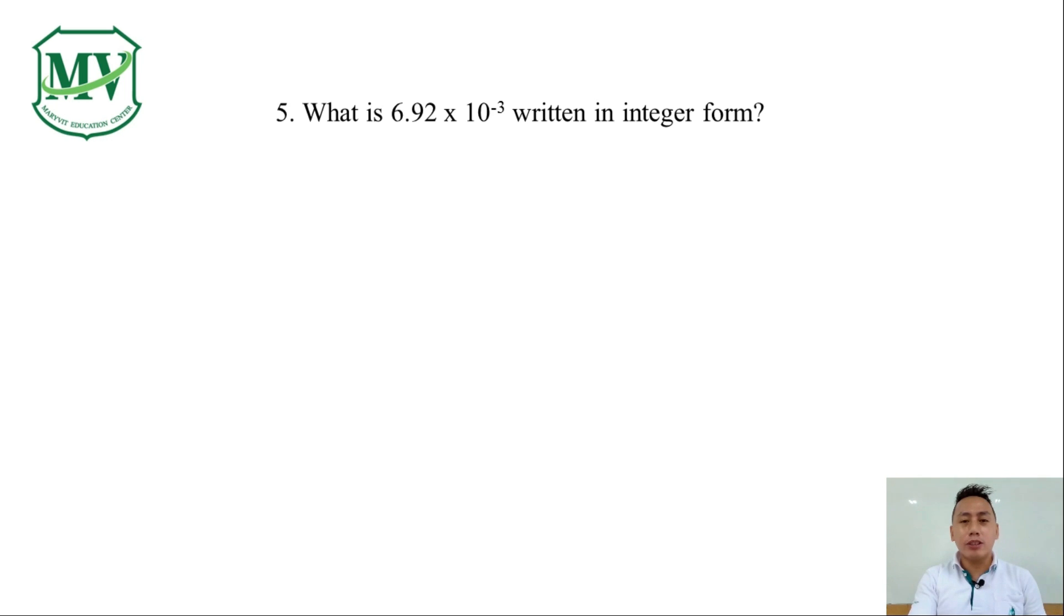Number five, what is 6.92 times 10 raised to the power of negative 3 written in integer form? a. 0.000692 b. 0.0692 c. 0.00692 or d. 0.692